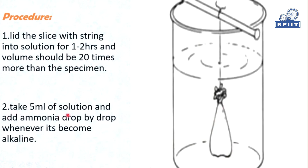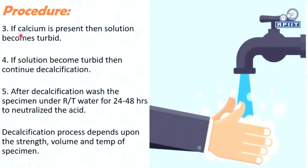Second, take 5 ml of solution and add ammonia drop by drop until it becomes alkaline. After keeping it for one to two hours, take out 5 ml of solution and add ammonia drop by drop — the solution will become alkaline. Third, if calcium is still present, then the solution will become turbid, meaning calcium is still present. Continue decalcification in that case.